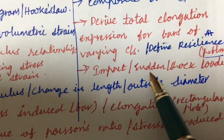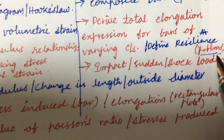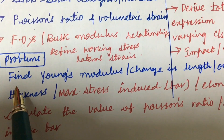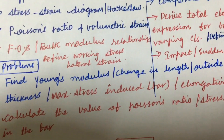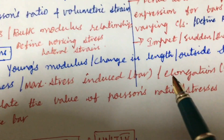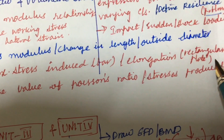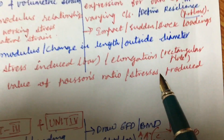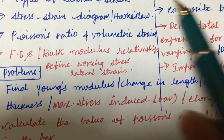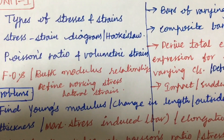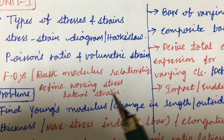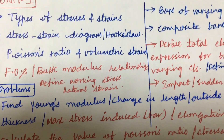The problems related to bars and composite bars are asked several times and will definitely come. Topics also include impact, sudden, and shock loadings. Questions will ask you to find Young's modulus, change in length, outside diameter, thickness, maximum stress induced in a bar, elongation of a rectangular plate, Poisson's ratio, and stresses produced in the bar. Unit 1 covers the introduction and minimum basic fundamentals — work it out compulsorily to build concepts for Units 2 and 3.